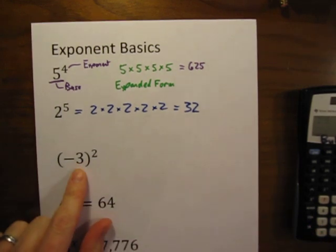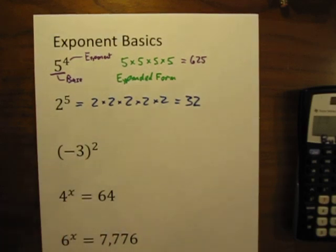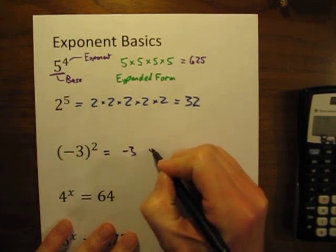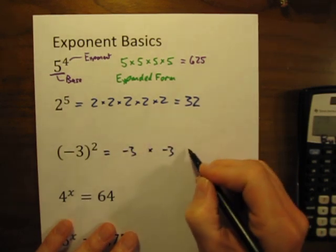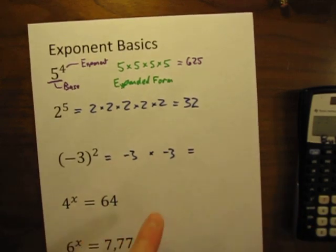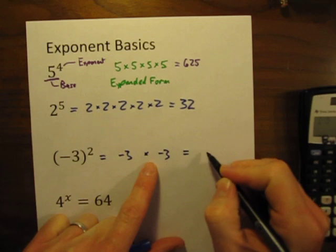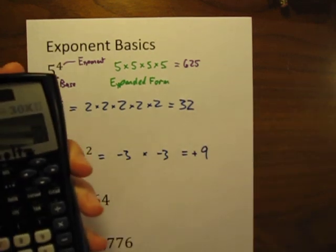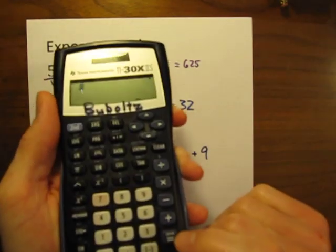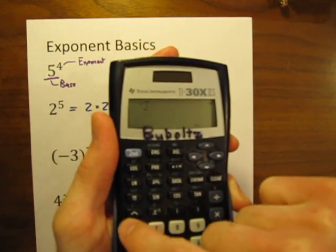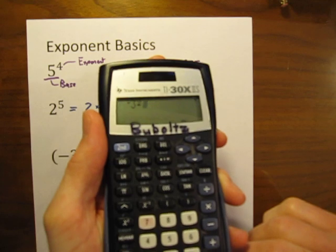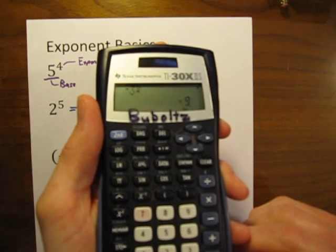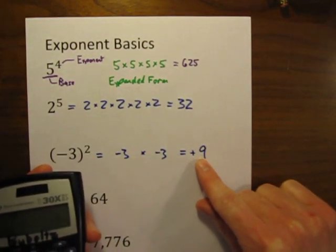One thing you have to be careful of: if the base is negative — say negative 3 — we know that this is going to be equal to negative 3 times negative 3. Any time you have a negative times a negative, it's going to give you a positive answer. So negative 3 times negative 3 should be a positive 9. You have to be careful though with your calculator. When you punch that in — negative 3 squared equals — it says the answer is negative 9, when we know the answer should be positive 9.